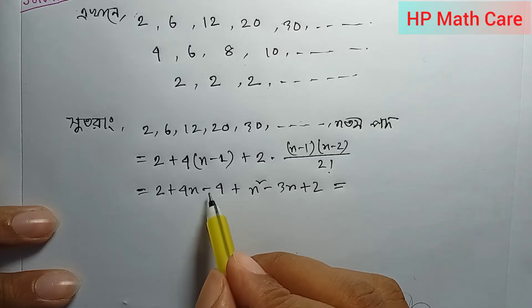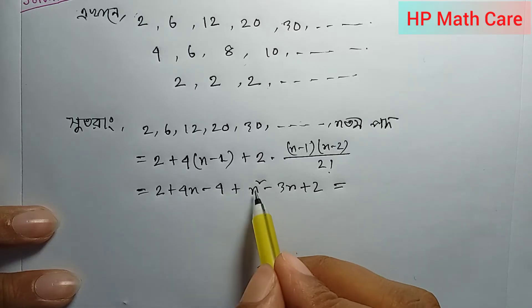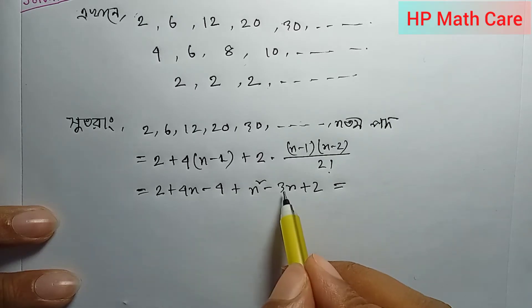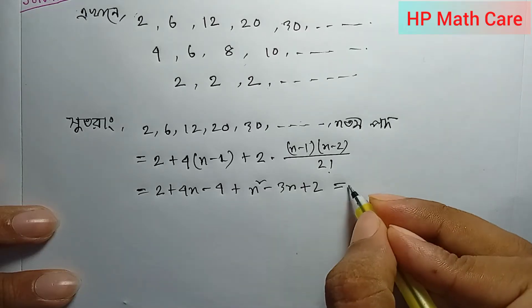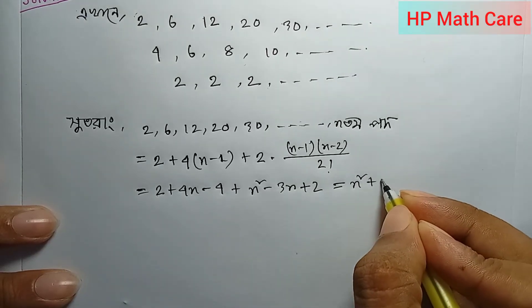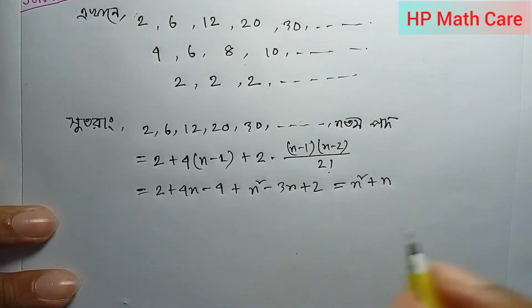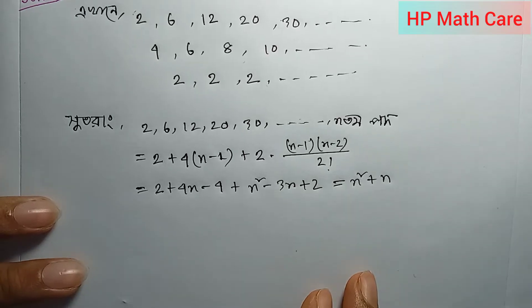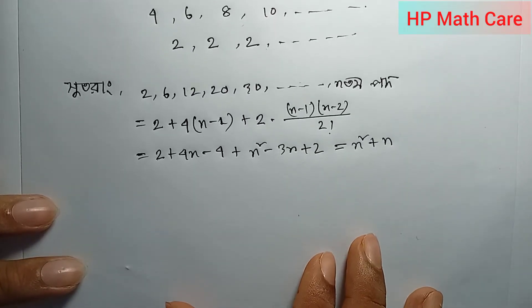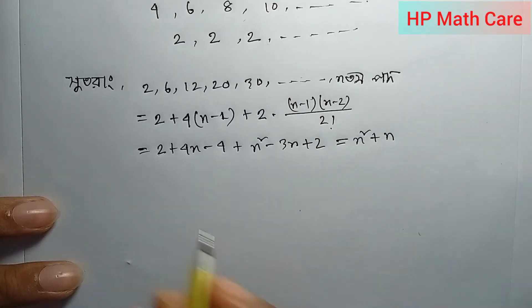Then we cancel the same thing, then n minus 2, n minus 2, n minus 3. If you want to write the same thing, then let's check the same thing.